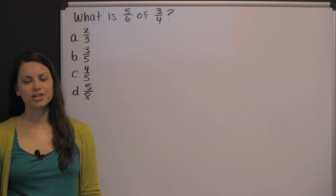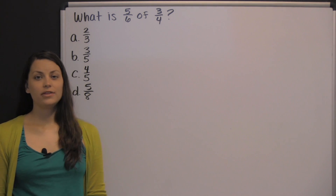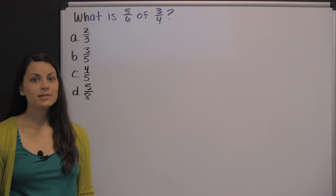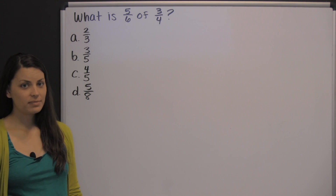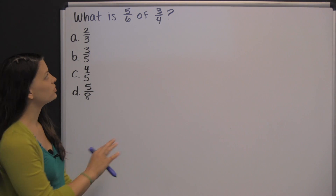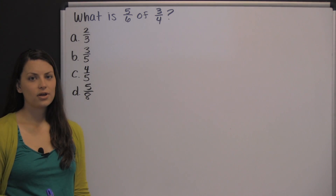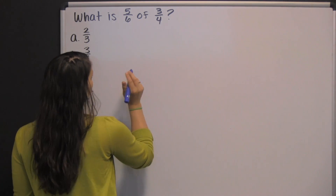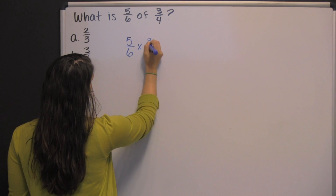One of the math sections on the Accuplacer exam is the arithmetic section. On the arithmetic section, you're going to be tested on basic math, so you need to be prepared to answer these questions without a calculator. One of the skills you'll be tested on is multiplying fractions. The question says: what is five-sixths of three-fourths? The first thing you need to know is that the word 'of' means to multiply.